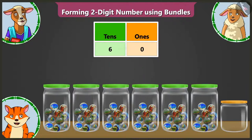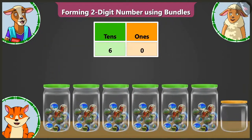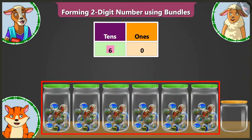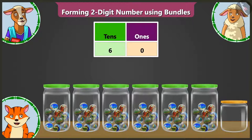Understood, children? A group of ten objects is called one group of tens. Similarly, whatever is the number of groups you have, you have to write that number in the tens box. And when there is not even one object in the group, you have to write zero in the ones box.